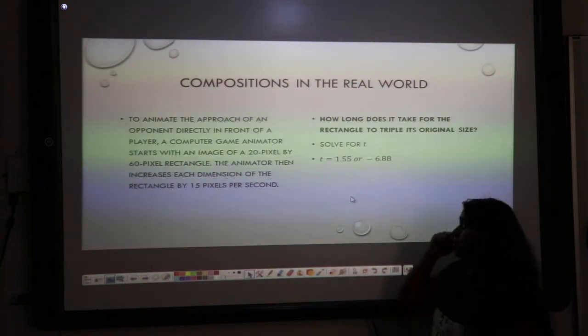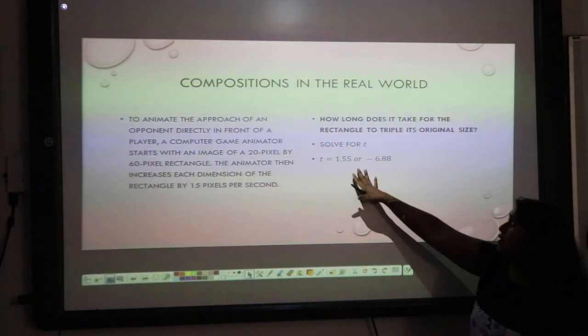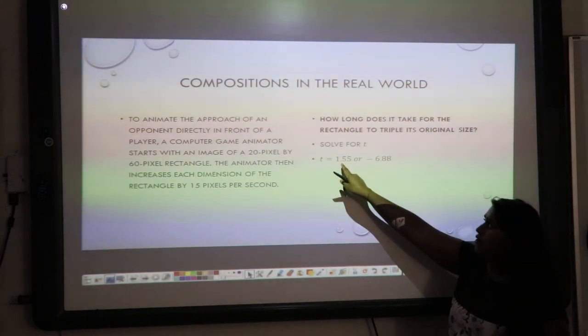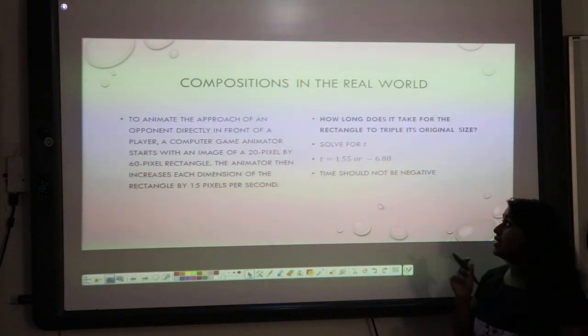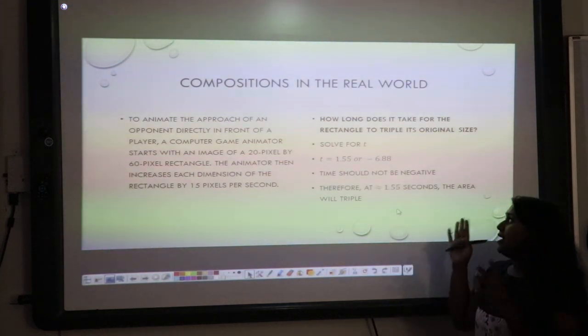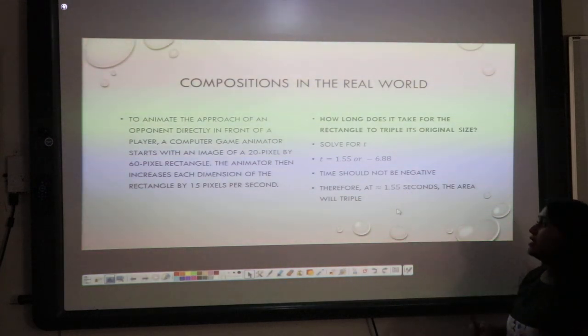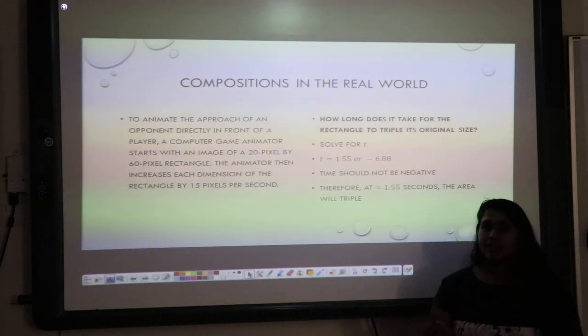Or, if it's a simple solve, then I do it myself. In this one, we had to do a calculator. And, we got 1.55 and negative 6.88. I can immediately cancel out one of those questions. Because, time cannot be negative. So, at approximately 1.55 seconds, the area will triple. And, there's my answer.